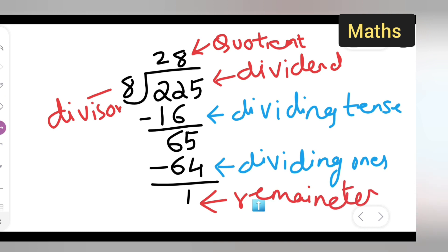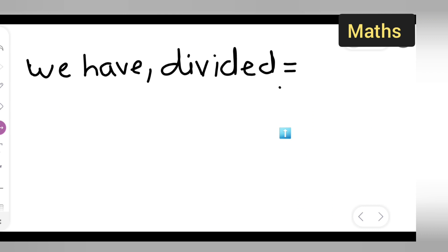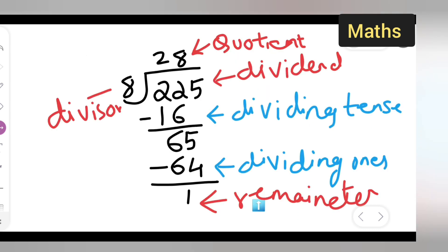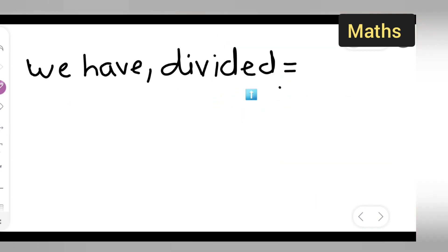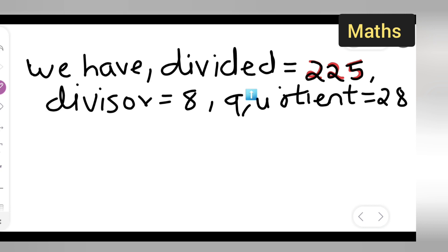Now let us see in the next page we have dividend. What is our dividend? The dividend is 225, so write down 225. Next we have divisor. Your divisor is 8. Next we have quotient, quotient will be 28.